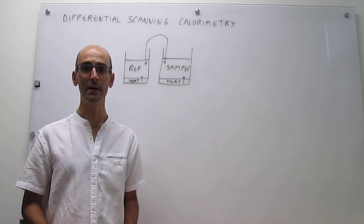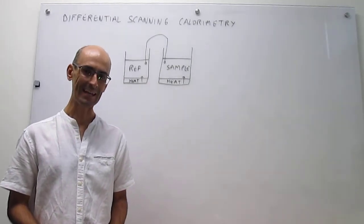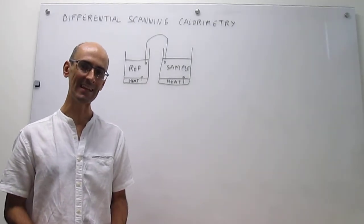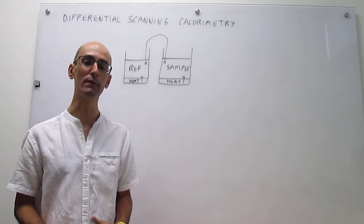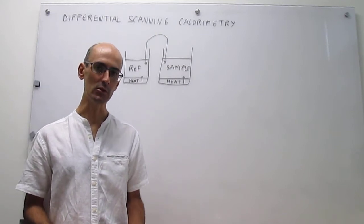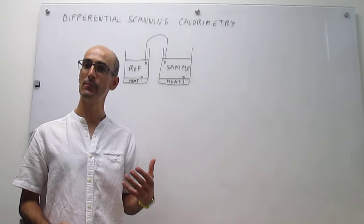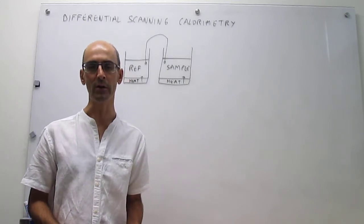In this video, we describe differential scanning calorimetry, which is the technique of choice to measure the enthalpy of denaturation of complex molecules like proteins, DNA, polymers, and so forth.